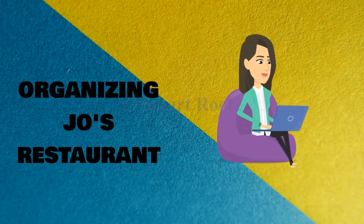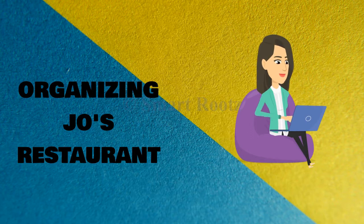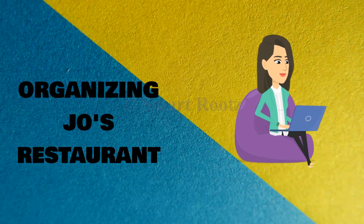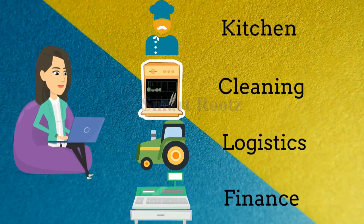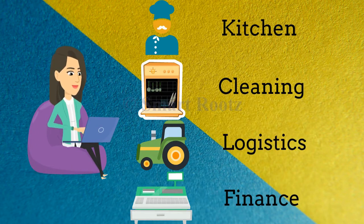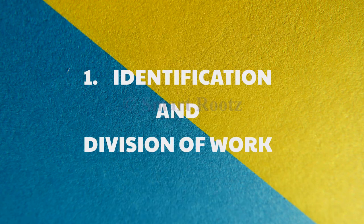Taking Annie's restaurant as an example, Jo has now decided to initiate implementing the plan by organizing her restaurant. Jo first identifies and divides work as kitchen, cleaning, logistics, and finance. As a first step in organizing, Jo has identified and divided work into manageable activities so that duplication of work can be avoided.